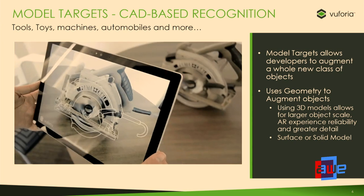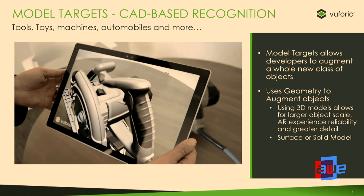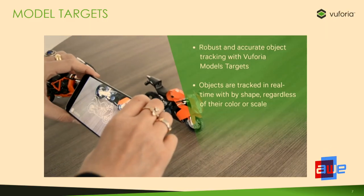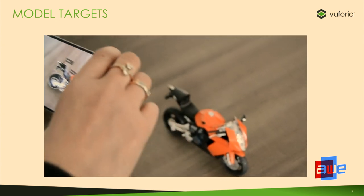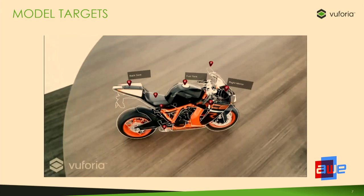Model targets allows us to augment objects based on their geometry, not necessarily their visual features. Because model targets are detected by shape, the color of the object can change over time. So if construction equipment gets dirty on a job site, you can still augment it based on its geometric detail. As you can see in this demo, the user points the device toward a toy motorcycle, aligns to an outline, locks on, and places content onto the object. It's a cross-platform solution that works on all major devices, including HoloLens.